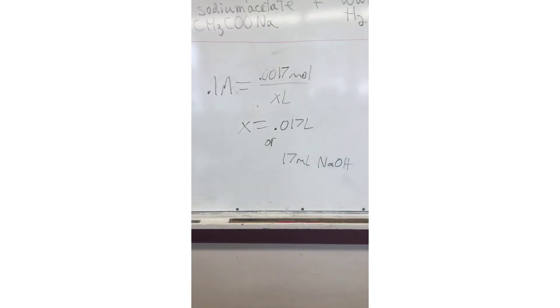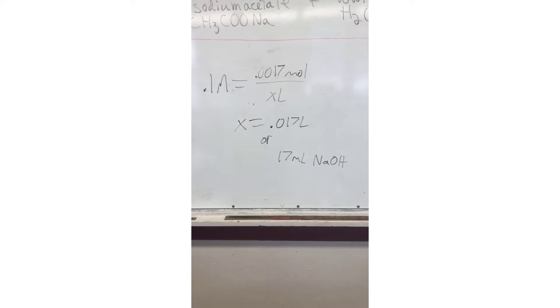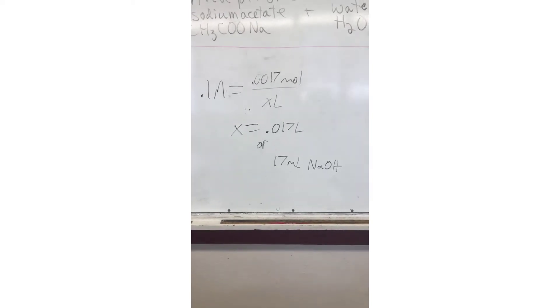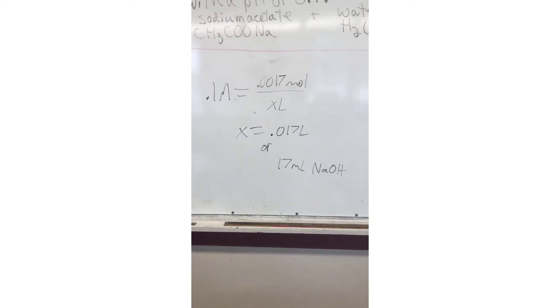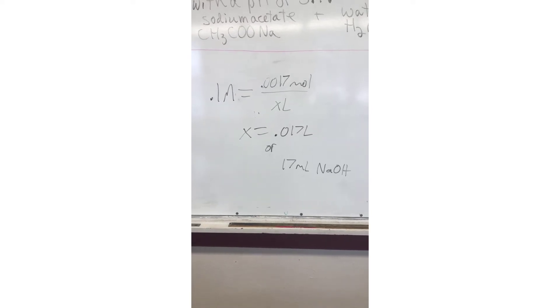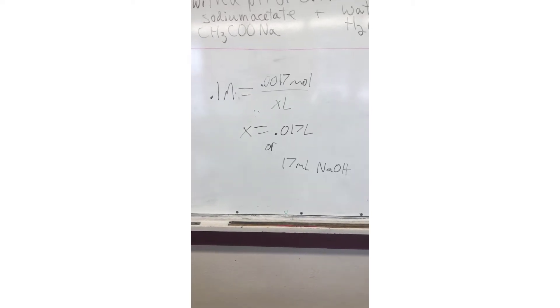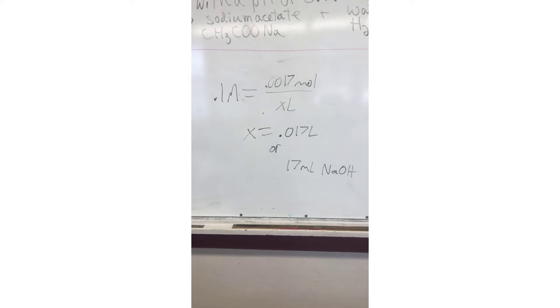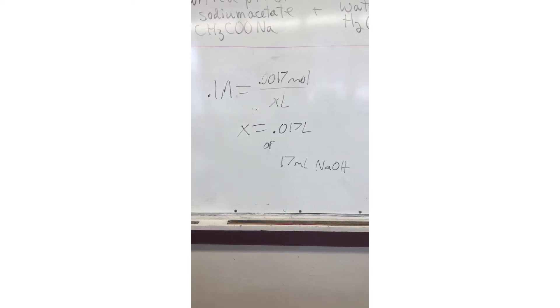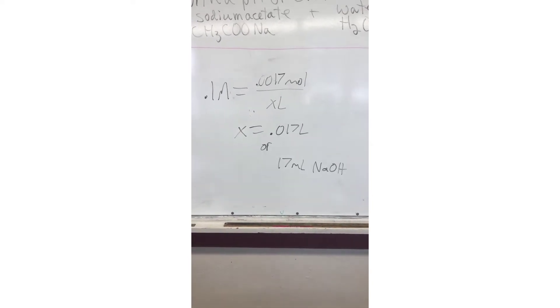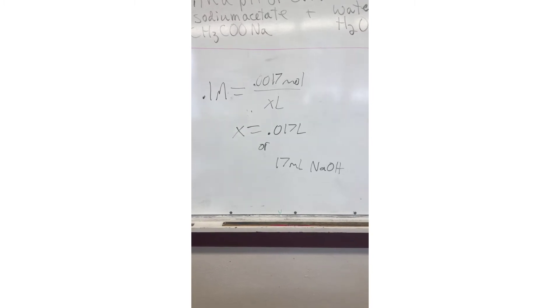At 0.0017 moles of sodium hydroxide, we must determine how many milliliters that is in order to use that fundamentally. We plug that into the molarity formula for our 0.1 molarity concentration, and we find that we need 0.017 liters, or 17 milliliters, of sodium hydroxide to carry out our reaction.